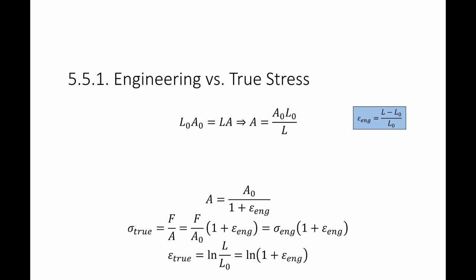The true strain is equal to the natural logarithm of L over L₀. Since L over L₀ is equal to 1 plus epsilon engineering, the true strain equals the natural logarithm of 1 plus epsilon engineering.